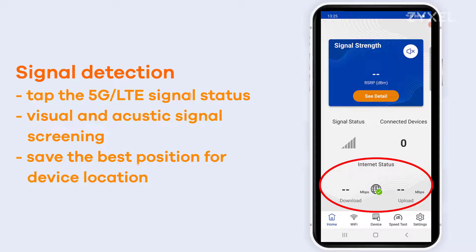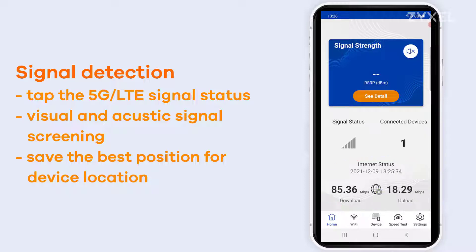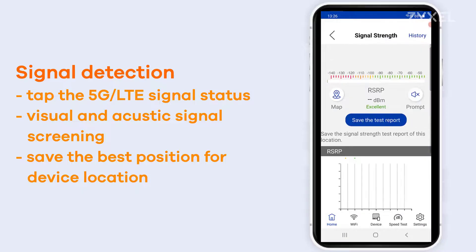To find the optimized position for your LTE device you can tap on the signal status icon on the home page. While the application is looking for the best LTE signal it can also prompt you with a beep.